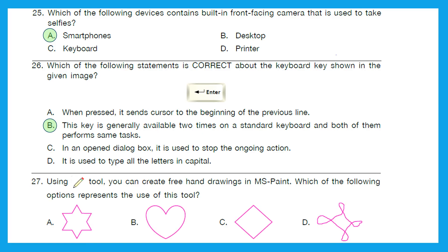Question 27: Using pen or pencil tool, you can create freehand drawings in MS Paint, right? Which of the following options represents the use of this tool? Is it A, B, C, or D? So which one is freehand drawing out of these four? It's option D.